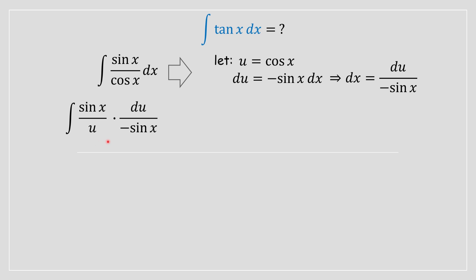So once we have done that, we are going to cross out the terms that are alike. Notice you have a sine of x in the numerator and you have one in the denominator, so that's going to cancel out. And what we're going to be left with when we rewrite it is negative the integral of 1 divided by u du.